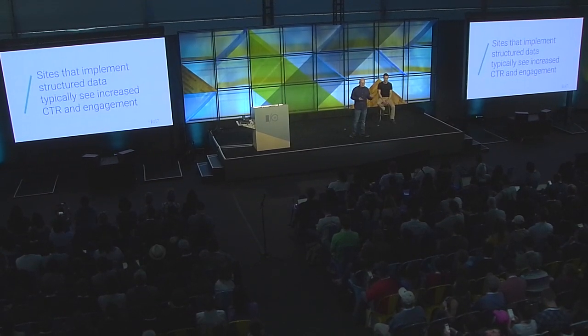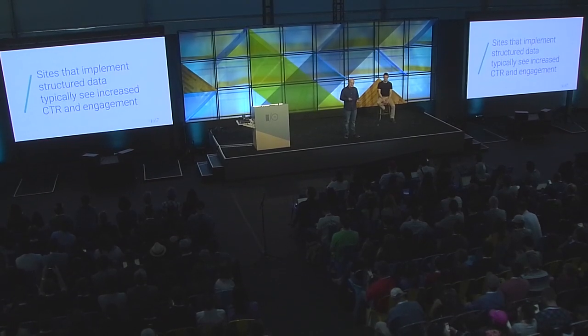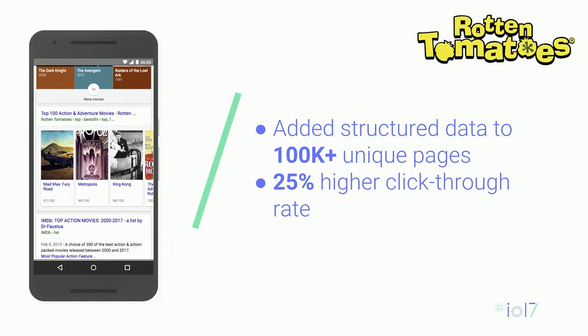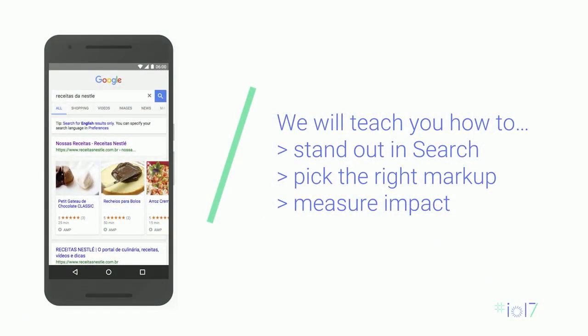In addition to all the information Google has in its knowledge engine, we use a lot of third-party structured data to power this. There's an opportunity for you: if you have a site with relevant information, you can organize and optimize it to participate in these features. Sites that implement structured data typically see increased click-through rates and increased engagement — the users that come to you are better users. For example, Rotten Tomatoes implemented structured data on more than 100,000 pages, attracting billions of impressions and a 25% higher click-through rate compared to pages without structured data.